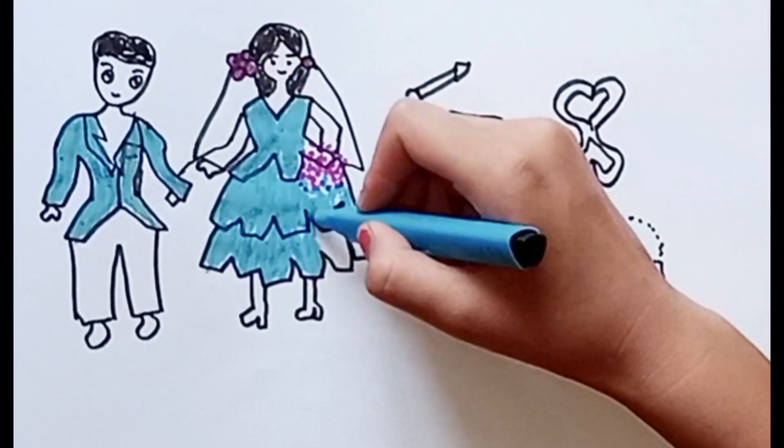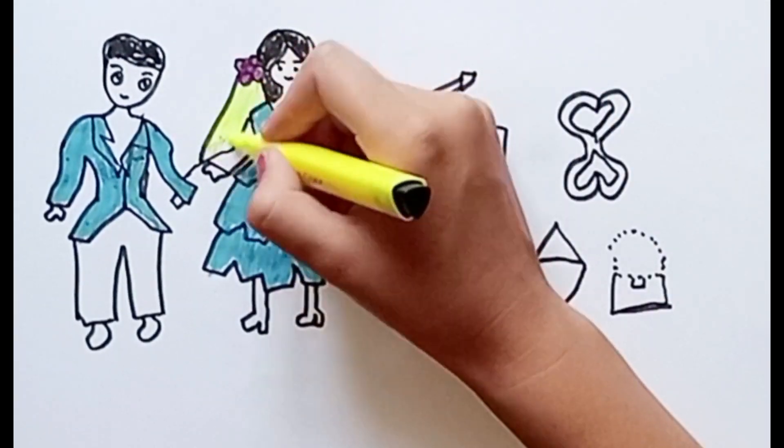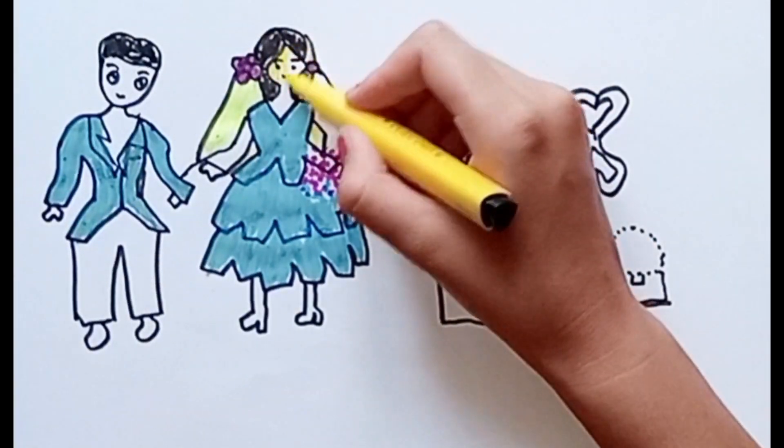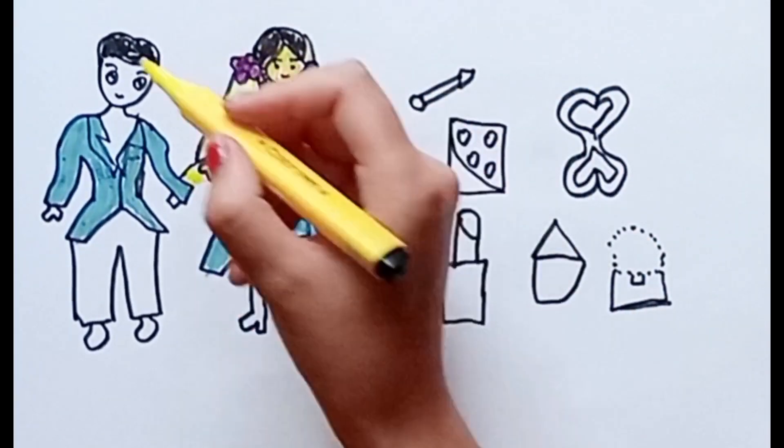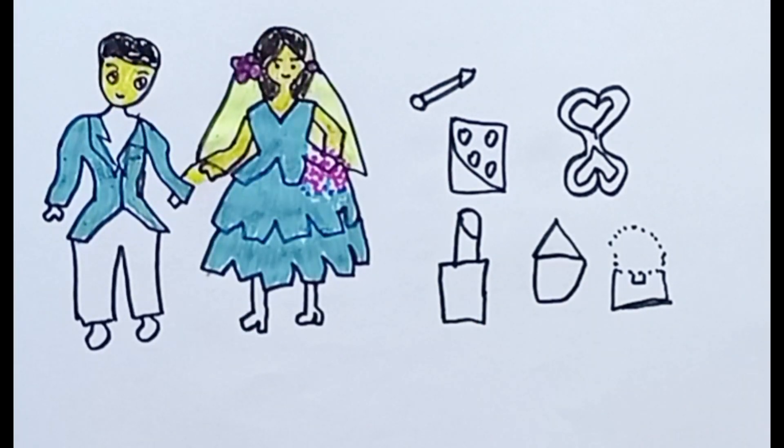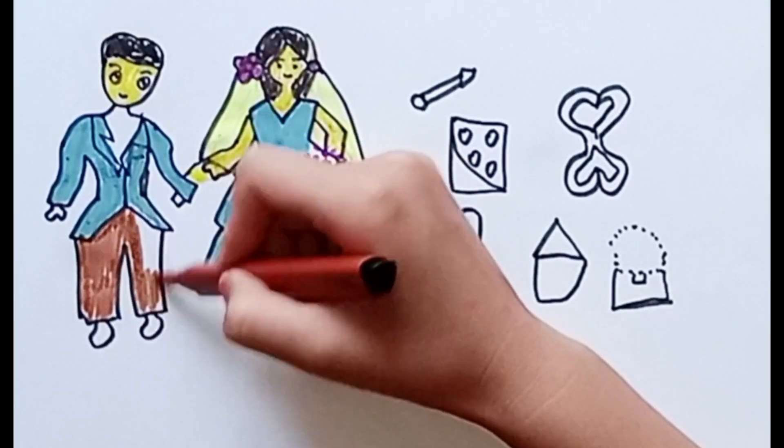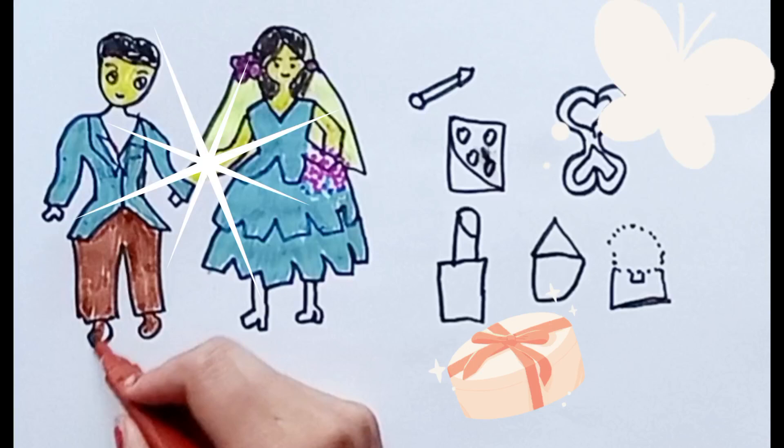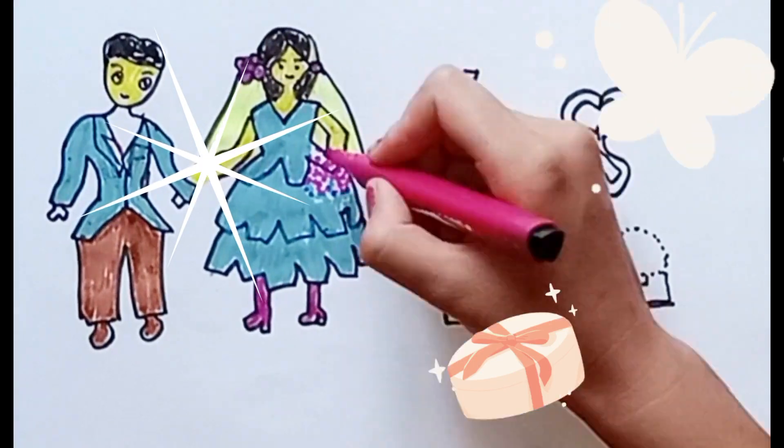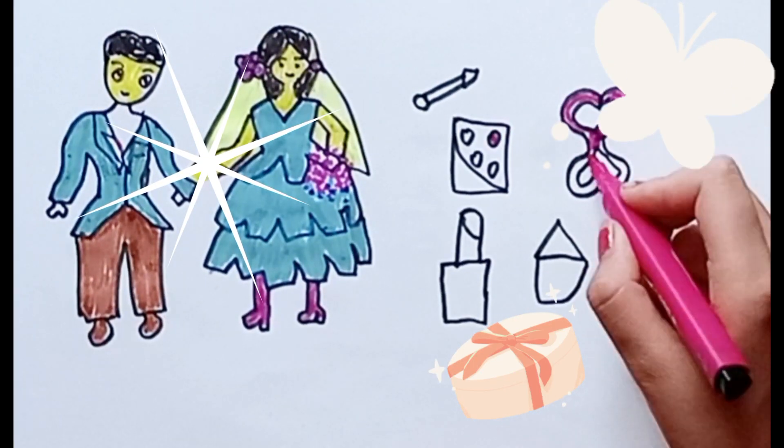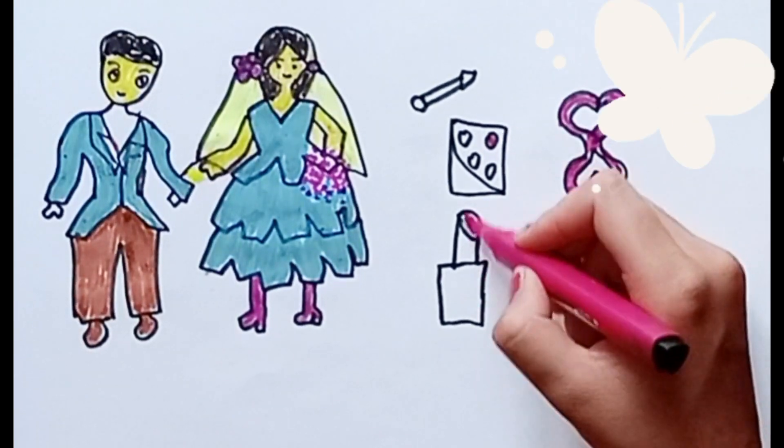[singing ABC song: A B C D E F G H I J K L M N O P Q R S T U V W X Y and Z] Now I know my... I am drawing wedding dress. Wow!